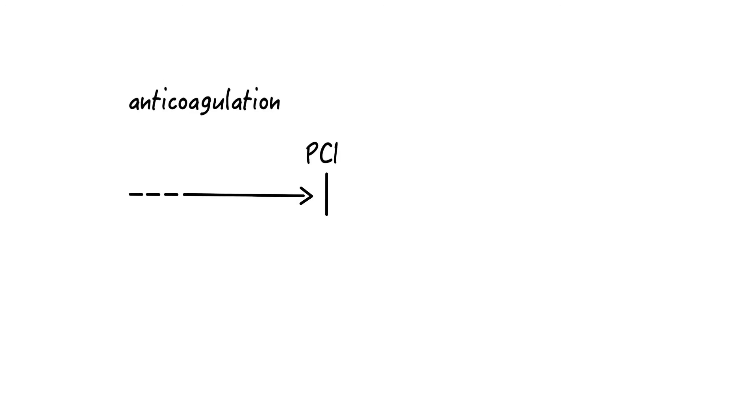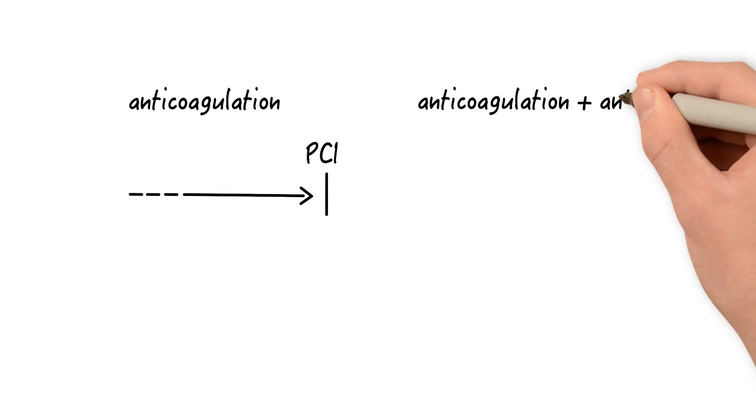All of these patients had received anticoagulation before stent implantation or PCI. After PCI, they were given a combination of anticoagulation and antiplatelet therapy, which was either dual or triple therapy. Most patients received drug-eluting stents, but there were also some patients with bare metal stents.